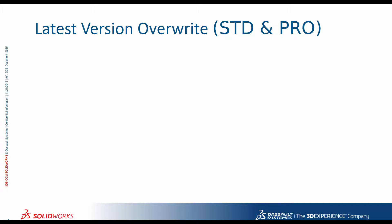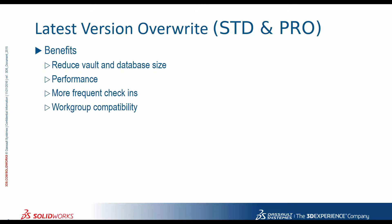The first thing we want to go over is latest version overwrite. This function is really for those of you that might have some limitations in hard drive space for your archive. The benefits of doing a latest version overwrite are that it's going to reduce your vault and database size, your performance will have a slight increase, and you'll be able to do more frequent check-ins.